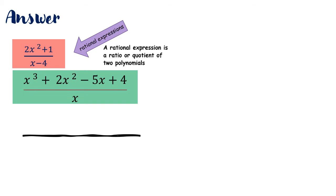If you look at the first one, you have 2x squared plus 1 all over x minus 4. The numerator is a polynomial of degree 2, and the denominator is a polynomial of degree 1. The other item has a degree of 3 for the highest exponent, and a denominator of x that is of degree 1.